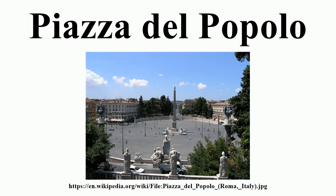Piazza del Popolo is a large urban square in Rome. The name in modern Italian literally means 'people's square.' The piazza lies inside the northern gate in the Aurelian walls, once the Porta Flaminia of ancient Rome, and now called the Porta del Popolo. This was the starting point of the Via Flaminia, the road to Ariminum and the most important route to the north. Before the age of railroads, it was the traveller's first view of Rome upon arrival. For centuries, the Piazza del Popolo was a place for public executions, the last of which took place in 1826.